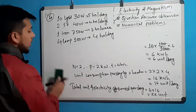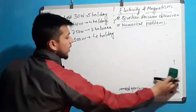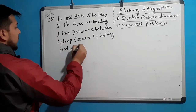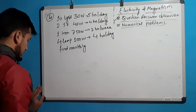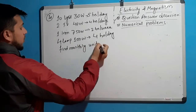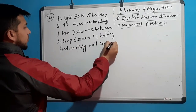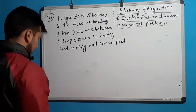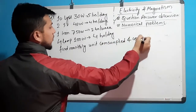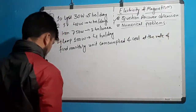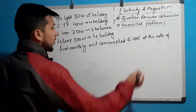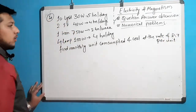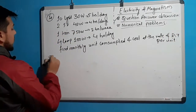What is the monthly electric consumption? The cost per unit is 7 rupees. Find the monthly cost. Solution: I will solve this similarly to the previous question.